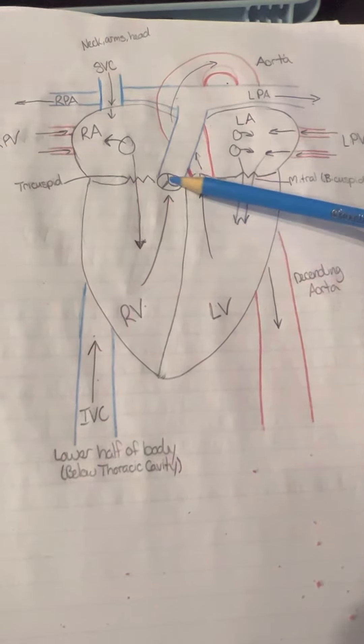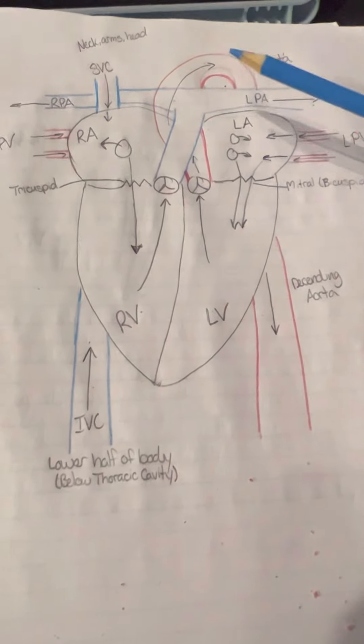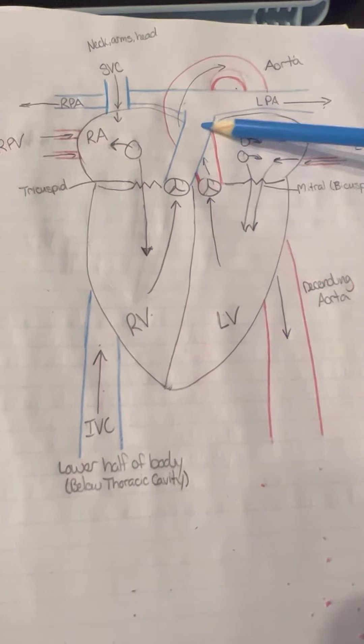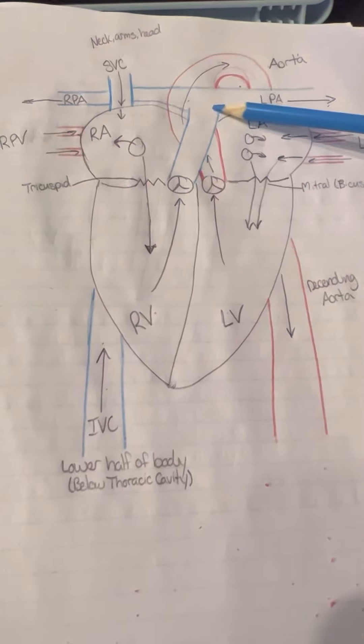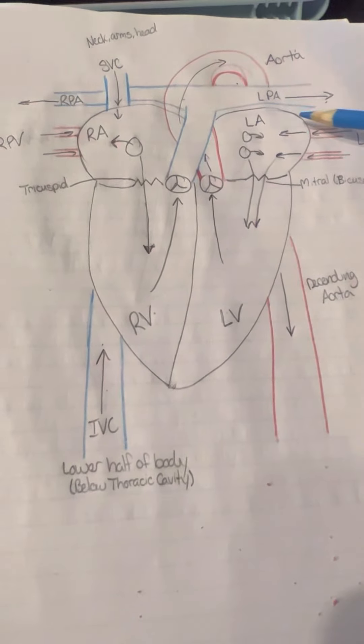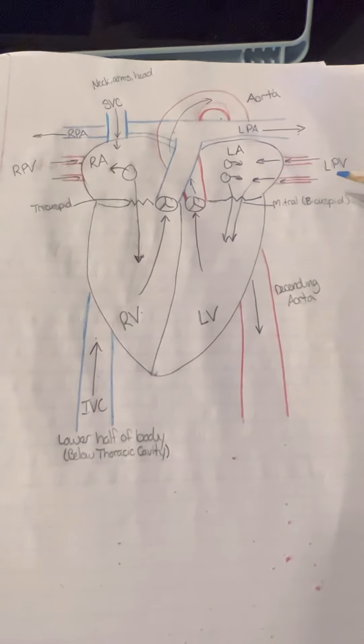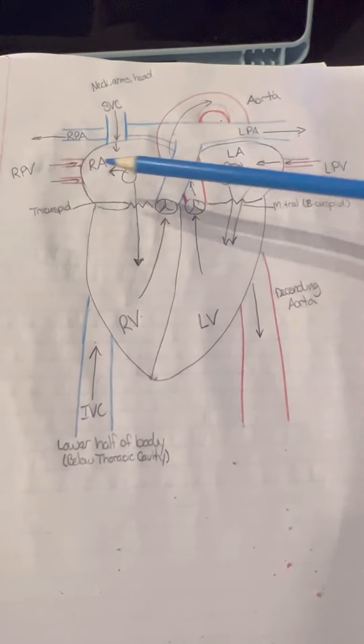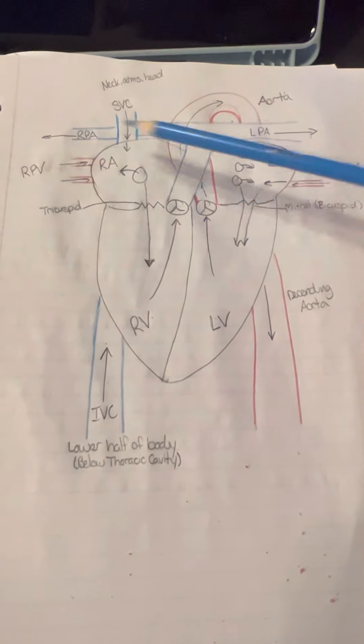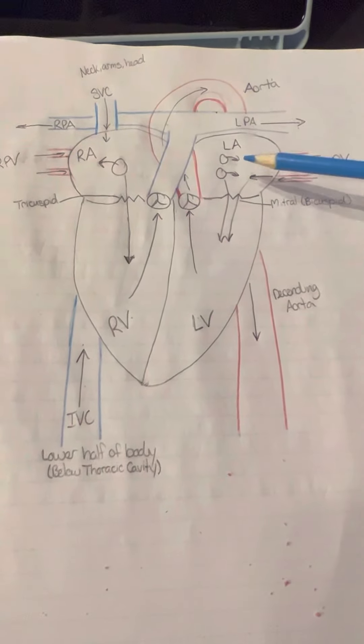These are arteries because they're going away from the heart and veins go back to the heart. Deoxygenated blood goes through the pulmonary branch into the pulmonary arteries, gets reoxygenated, and then comes through the left pulmonary veins and the right pulmonary veins. These will then come through the back and dump into the left atrium.